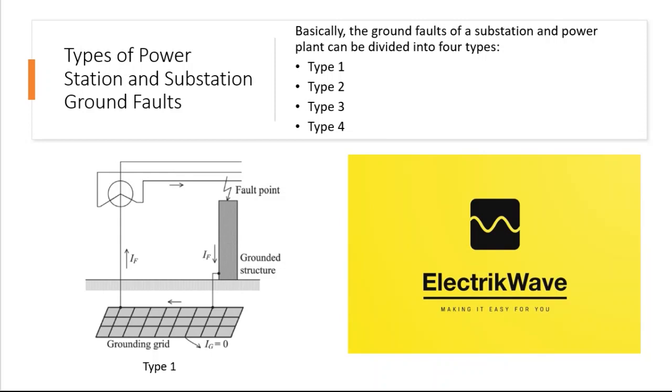Basically, the ground faults of a substation and power plant can be divided into four types: Type 1, Type 2, Type 3, Type 4.